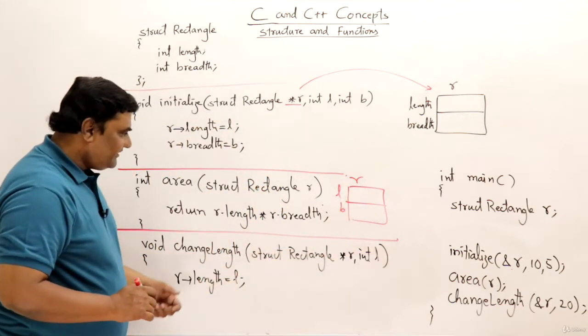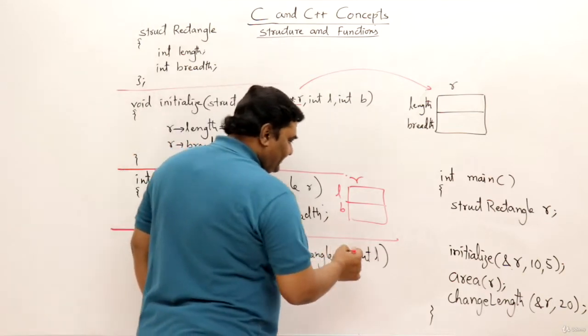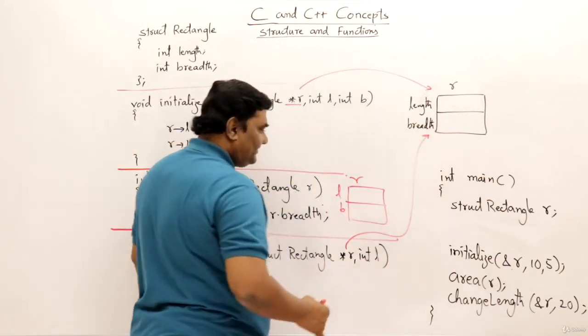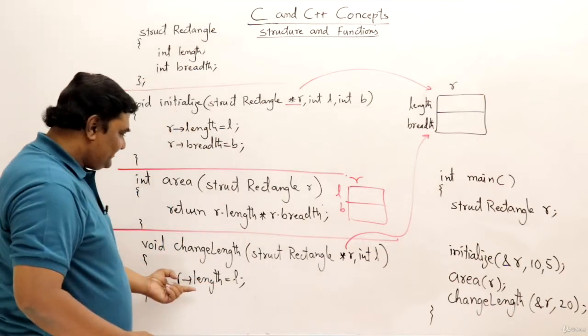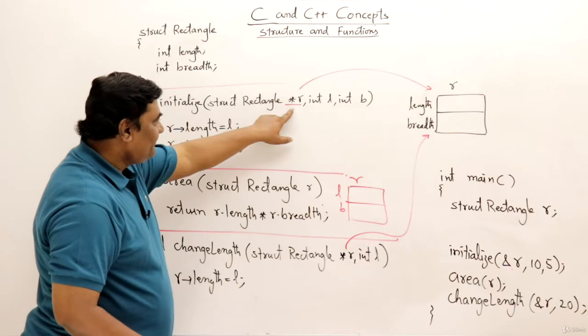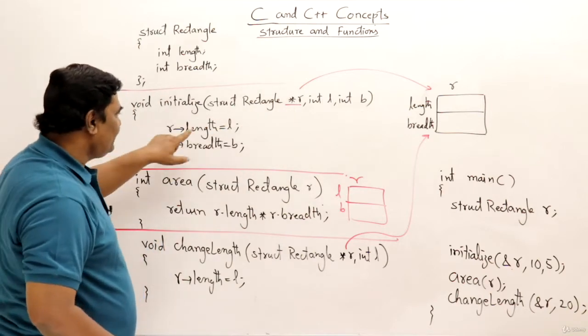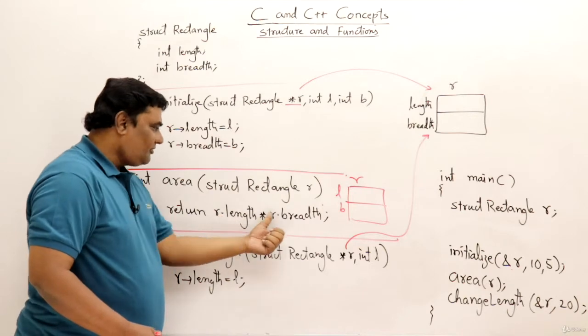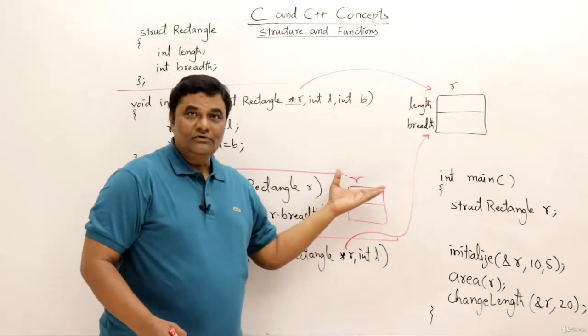And next let us look at this change length function. This is having a pointer and another length, that is new length. So this is also pointing to the same thing and it is just changing length. These two functions are pointers. They are having call by address, so they are using arrows. And this is called by value, so this is using dot operator and it is accessing its own rectangle.